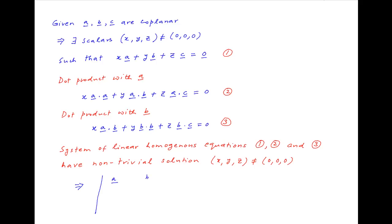This means that the determinant with the first row being a, b, c, the second row being a dot a, a dot b, and a dot c, and the third row being a dot b, b dot b, and b dot c is equal to 0, which is the required answer.